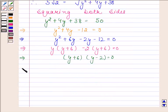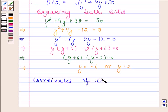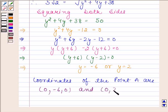And this implies y = -6 or y = 2. So coordinates of the point A are (0, -6, 0) and (0, 2, 0). This is our required answer. So this completes the session. Bye and take care.